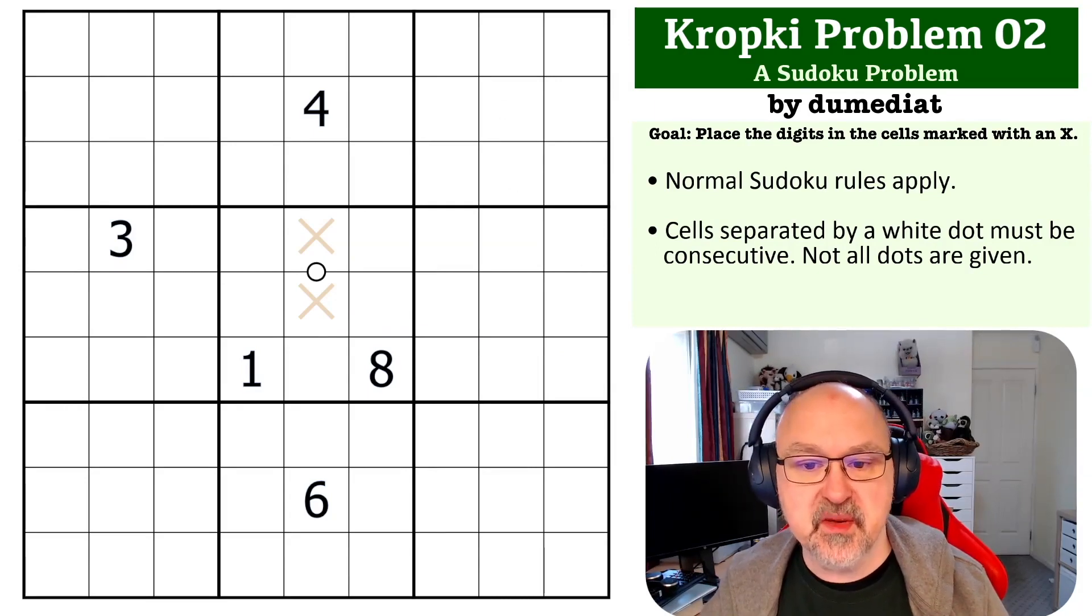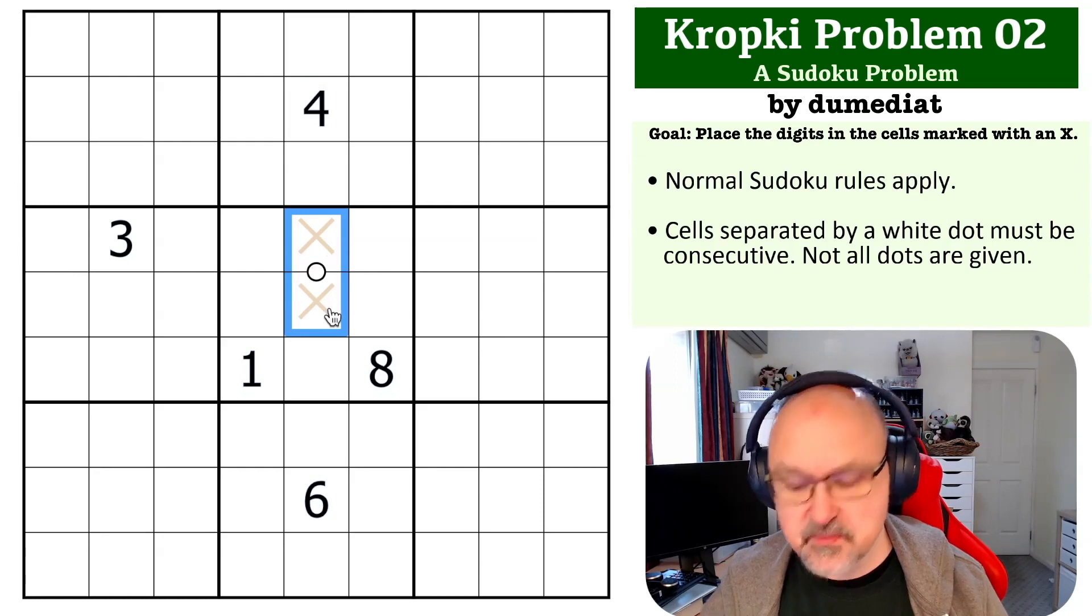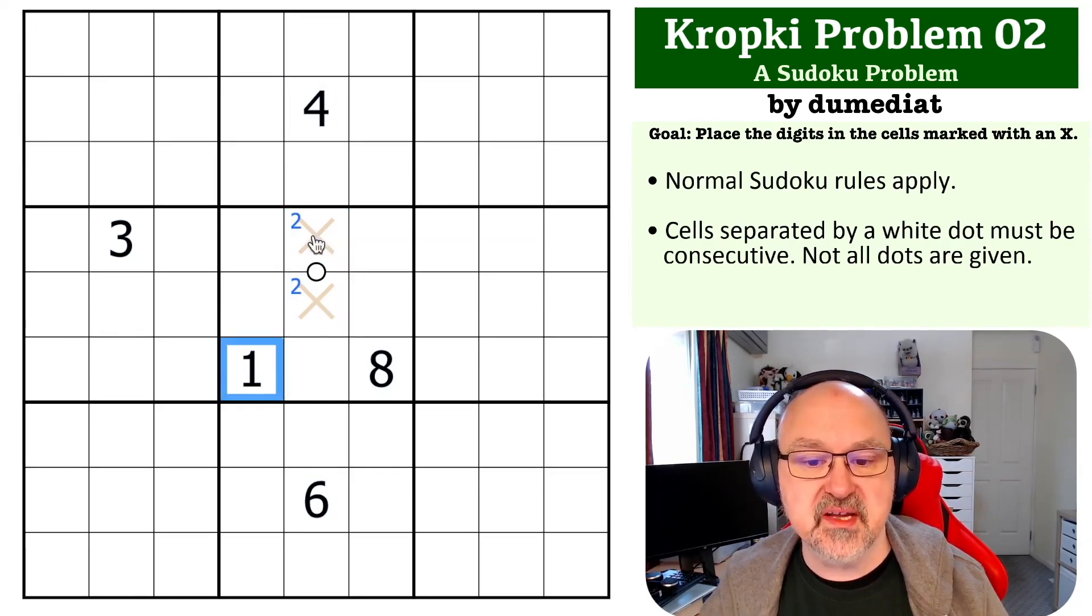Since I started looking at puzzles in a parity way, any white dot must have an even digit on it. So because it sees a four, a six, and an eight in both of its cells, this must have a two on it. So it must be one-two or two-three. It sees a one so it immediately has to be two-three.